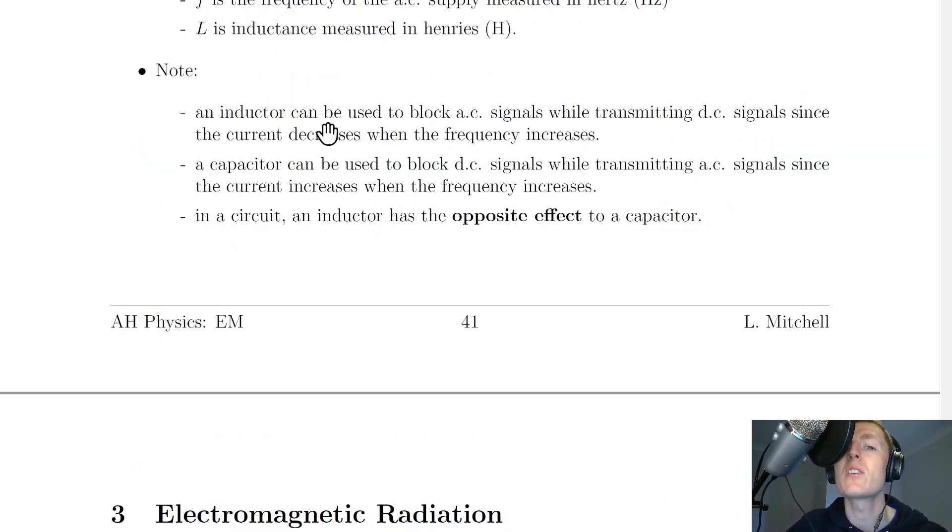As a little summary, an inductor can be used to block AC signals while transmitting DC signals since the current decreases when the frequency increases. And a capacitor can be used to block DC signals while transmitting AC signals since the current increases when the frequency increases.